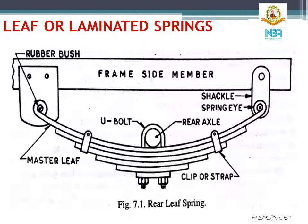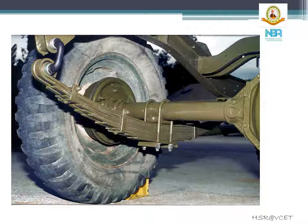When the vehicle comes across a projection on the road surface, the wheel moves up, deflecting the spring. This changes the length between the spring eyes. If both ends are fixed, the spring will not be able to accommodate this change in length. This is provided for by means of a shackle at one end, which gives a flexible connection. The picture on the slide shows the actual leaf spring set on a rear axle of a vehicle, where you can see the shackle and the U-bolt steel strap.